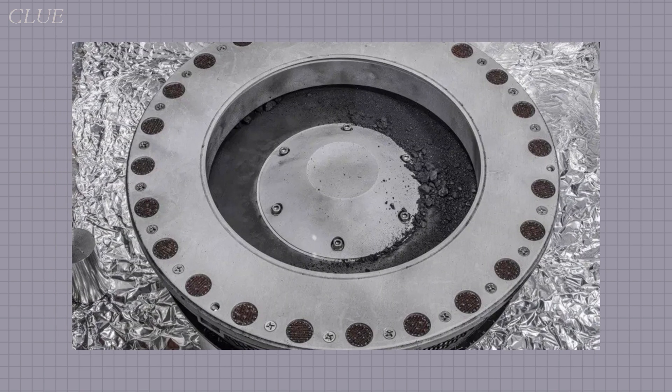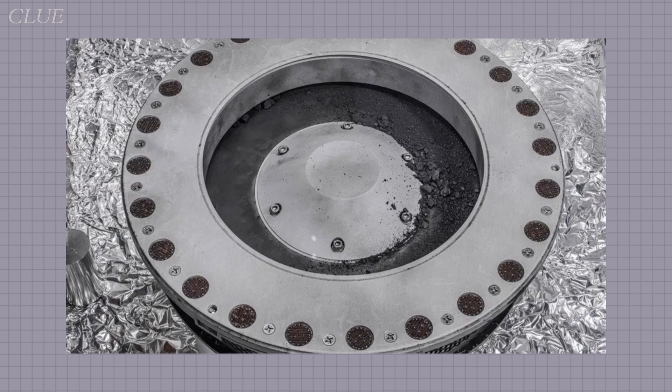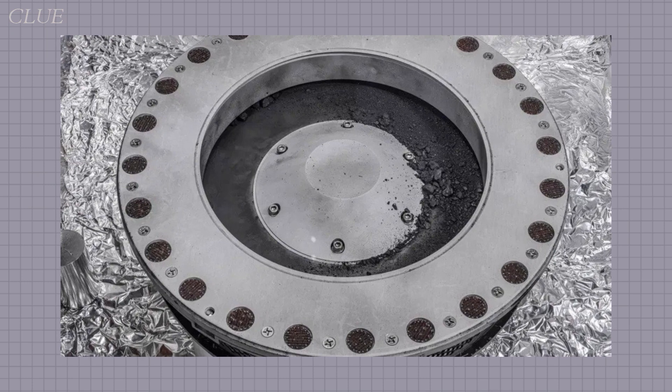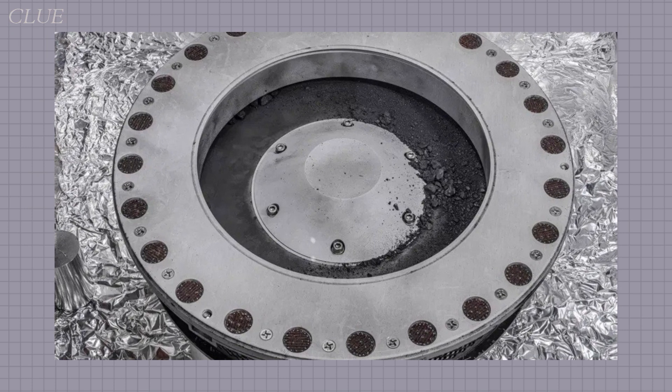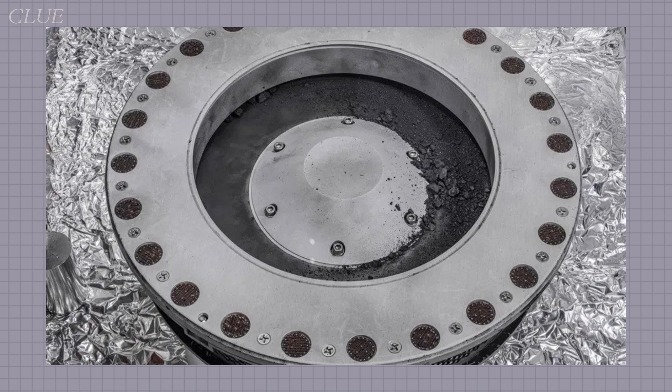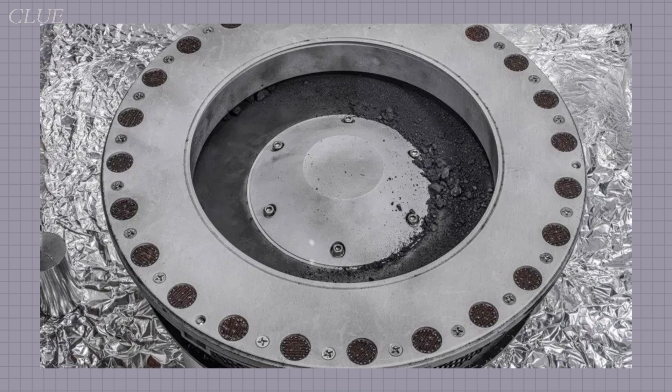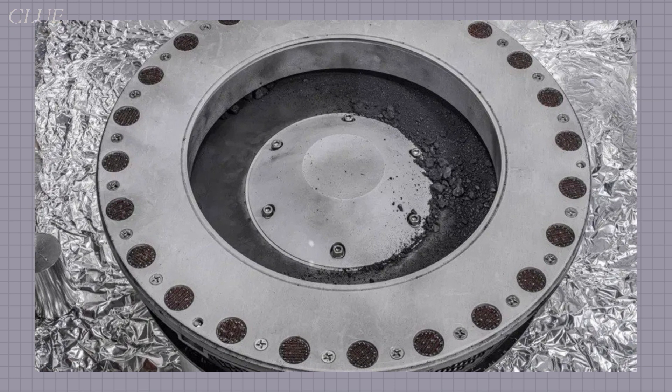But that's not all. Sulfide minerals, vital for planetary evolution and biology, and iron oxide minerals known as magnetite that react to magnetic fields, were also found. Other minerals, perhaps crucial for the evolution of organic compounds, still wait to be researched.